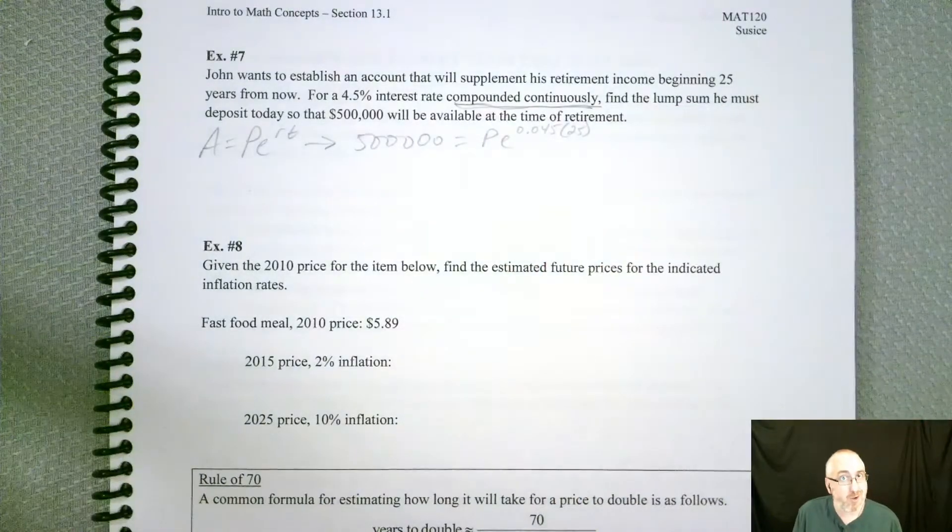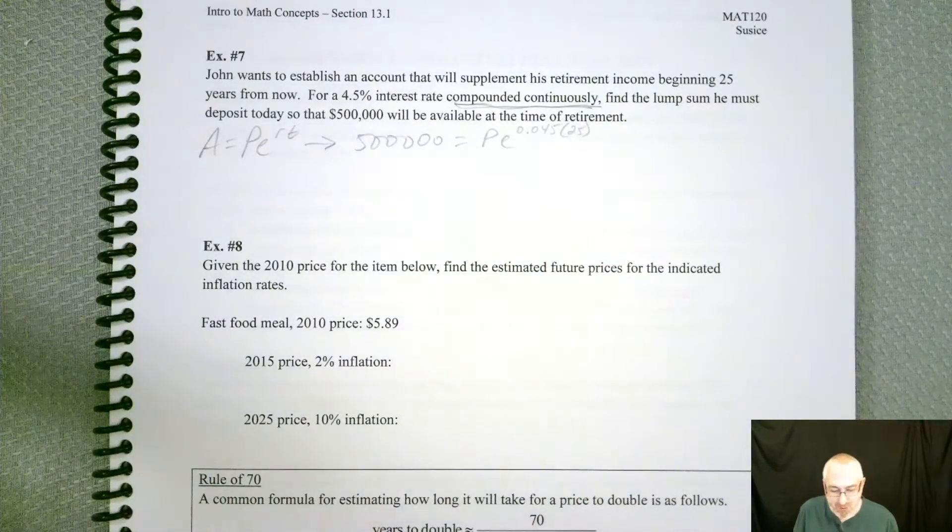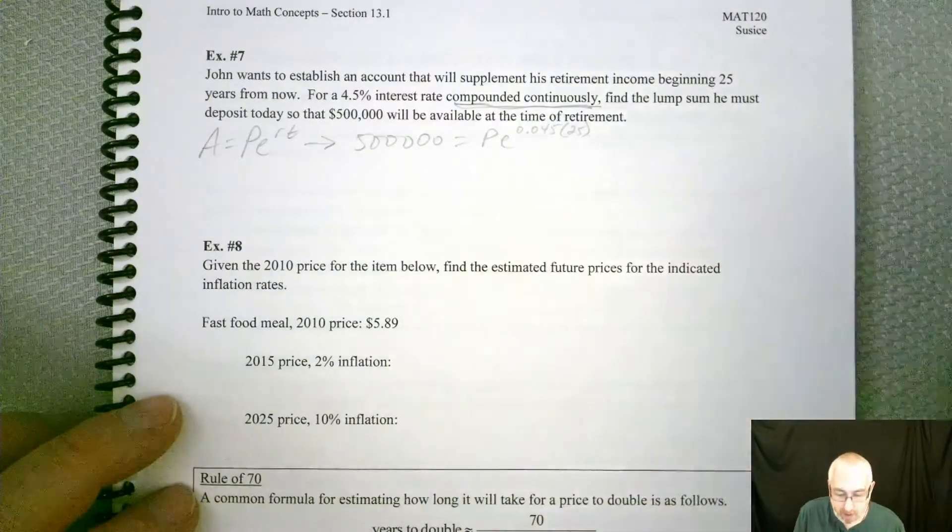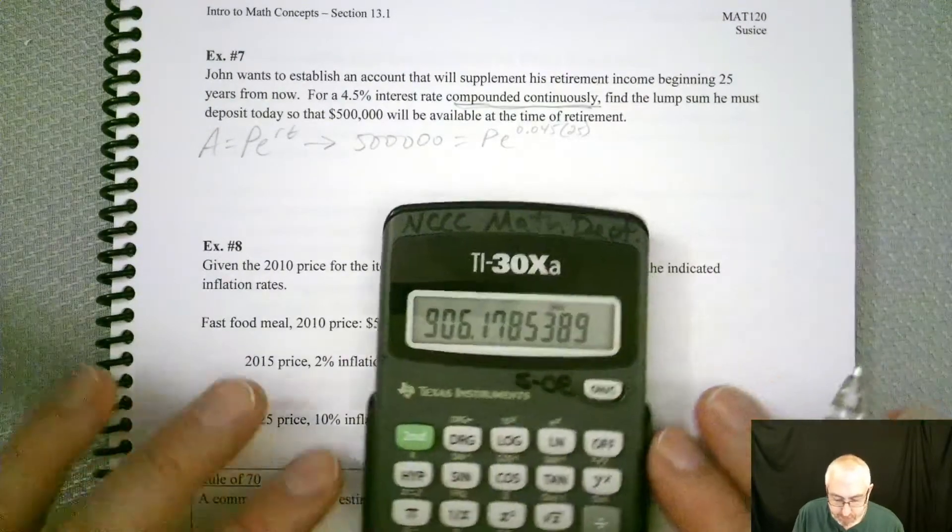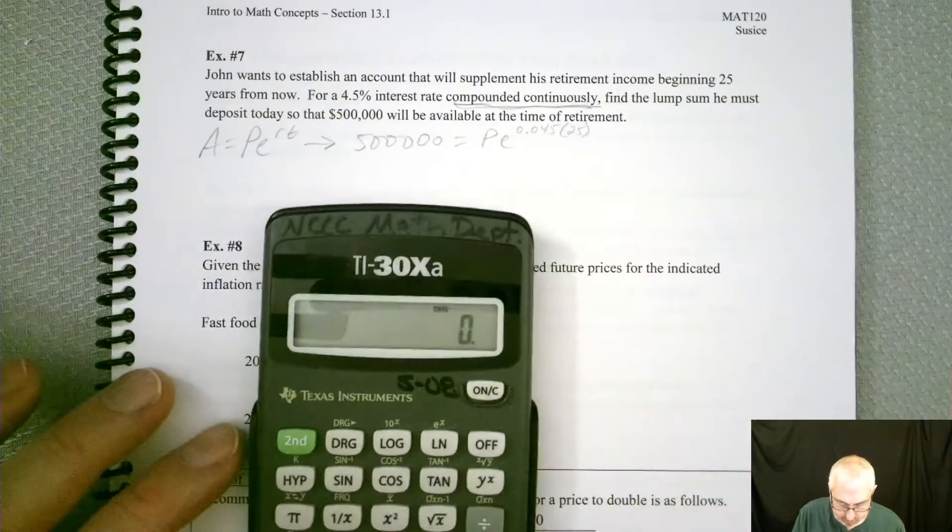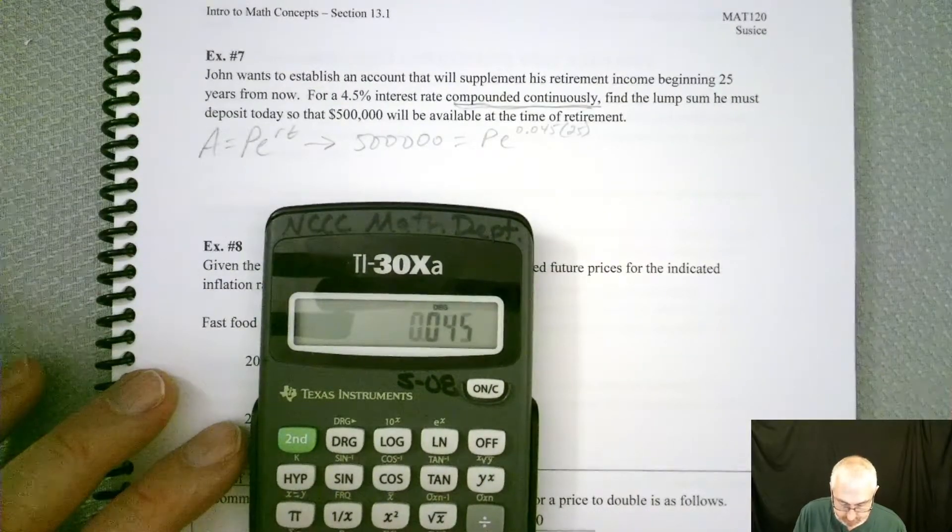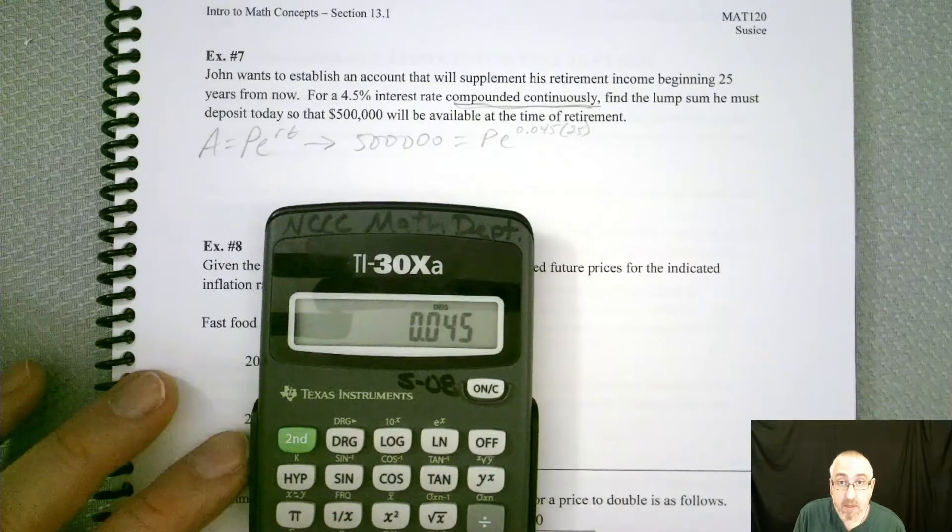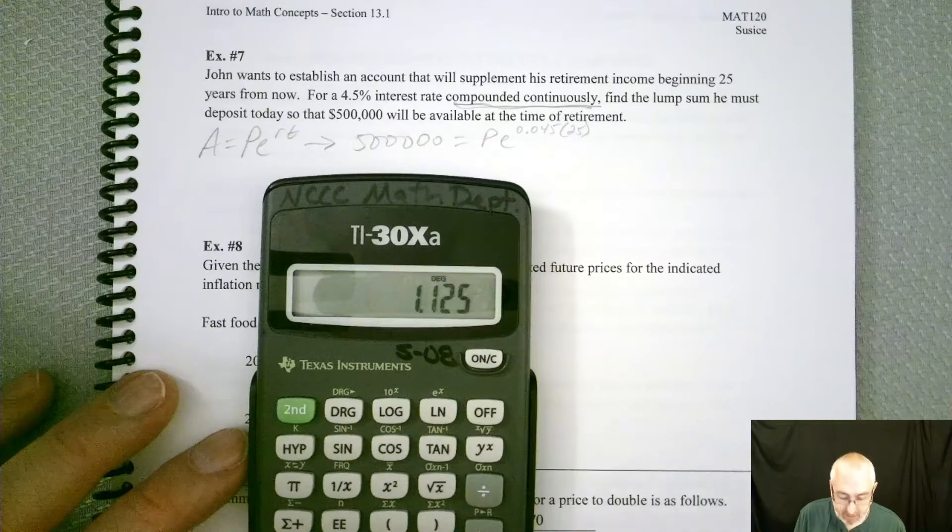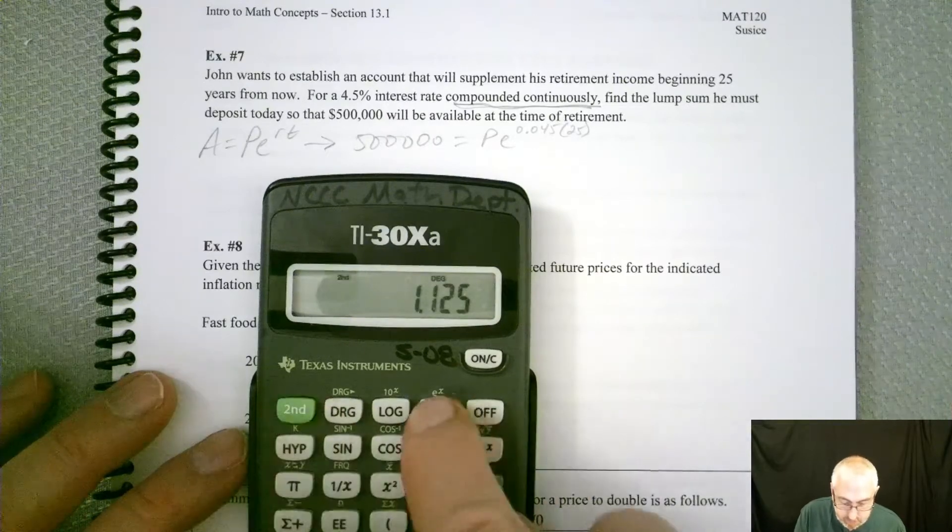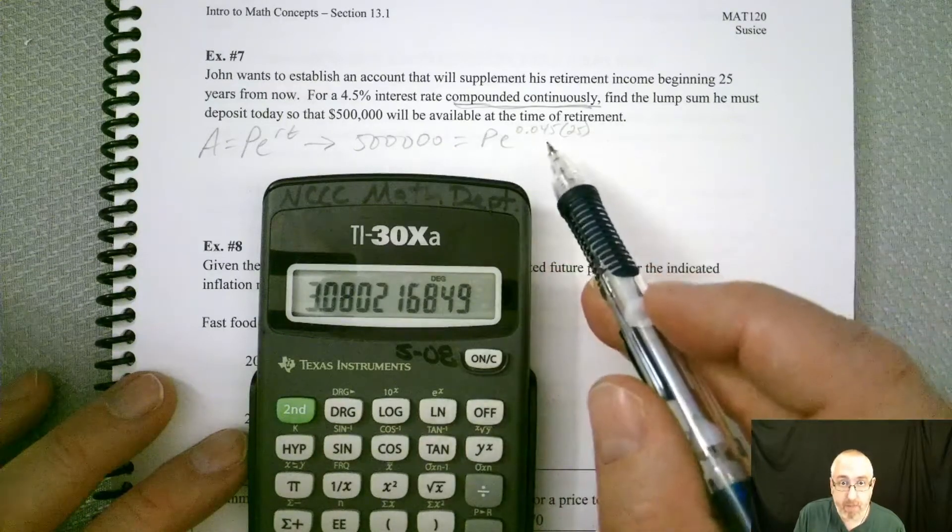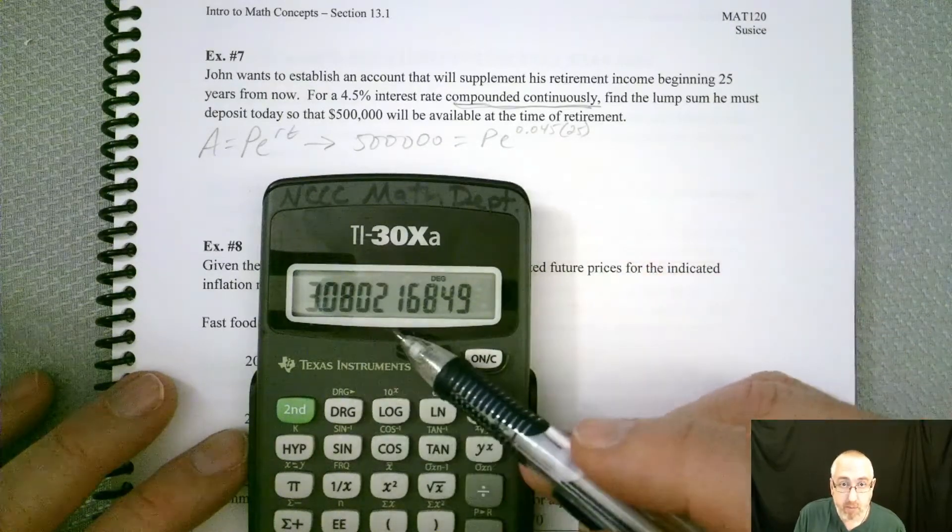So remember our little trick from before? So let's see what this, all this E stuff is going to boil out to be. So let's clear that out. So we got our exponent 0.045 times 25. So that's our exponent. Now we've got to E it. So there's that E expression. So 3.0802.